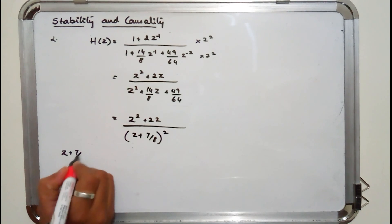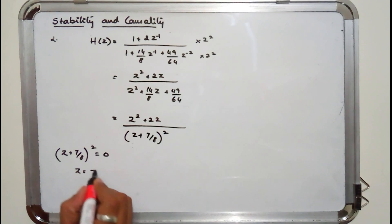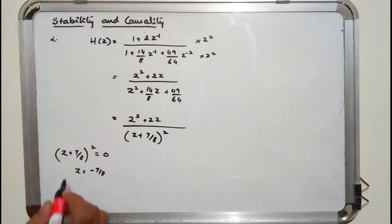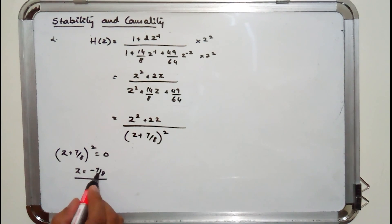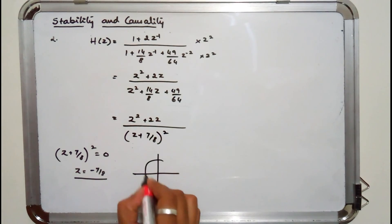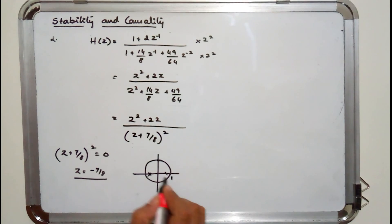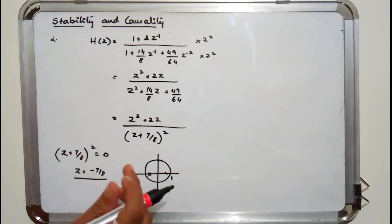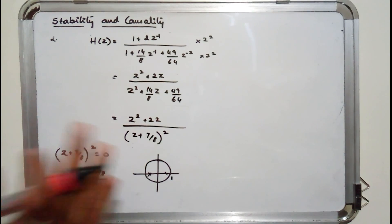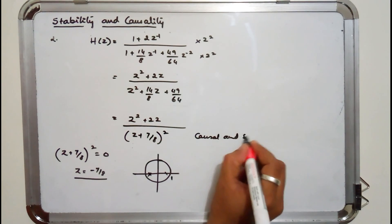Factorizing the denominator gives (z + 7/8)². The poles are found by setting (z + 7/8)² = 0, giving z = −7/8 (a double pole). Since |−7/8| = 0.875 < 1, both poles lie inside the unit circle. Hence the system is both stable and causal.